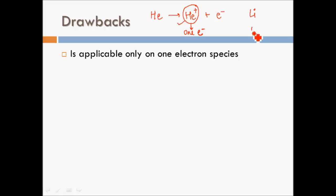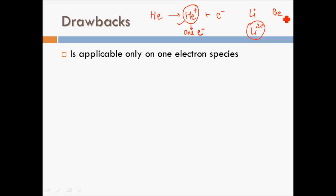Similarly, lithium has three electrons, so we cannot apply Bohr's model to lithium atom, but we can apply it to Li²⁺ — when two electrons are removed, one electron remains. Beryllium's atom cannot use Bohr's model either, but Be³⁺ can. This was a very important limitation and a major drawback of Bohr's model.